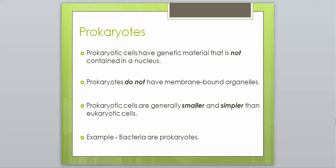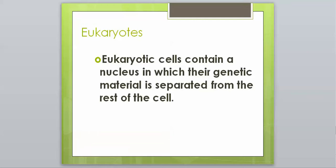That is our prokaryotic cells. We will go over, maybe make a little graphic organizer or something like that to keep those straight. Eukaryotes. Eukaryotic cells contain a nucleus in which their genetic material is separated from the rest of the cell. That's a big characteristic of them.